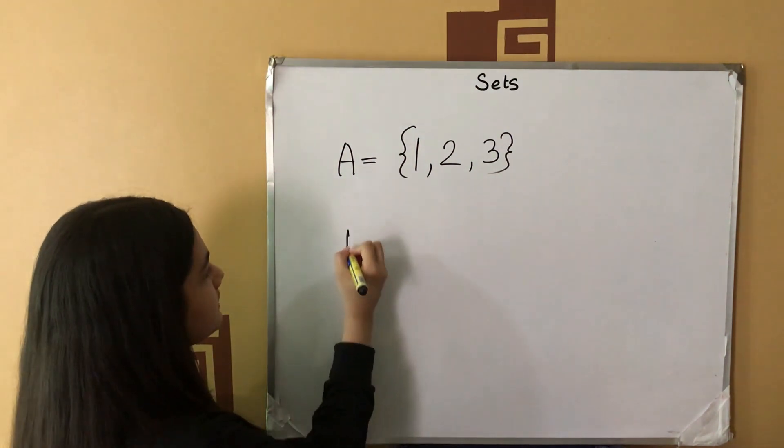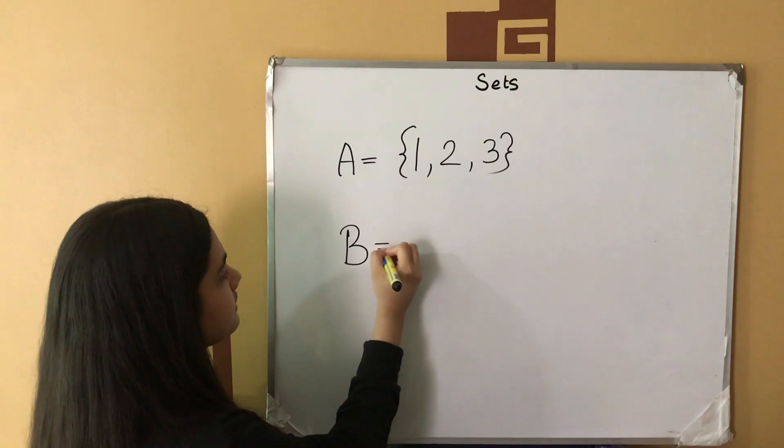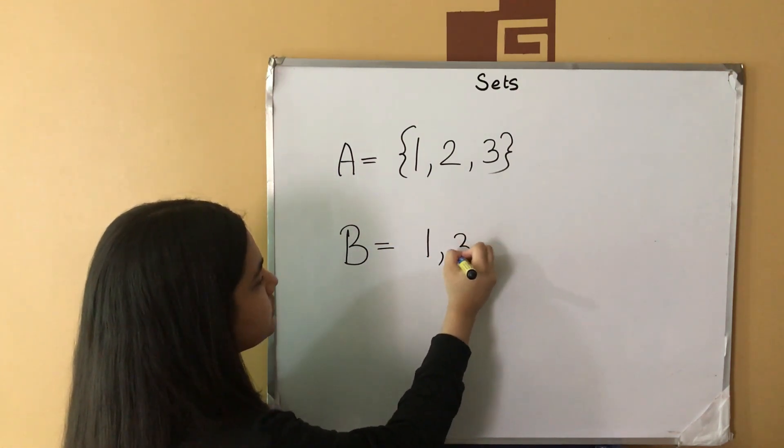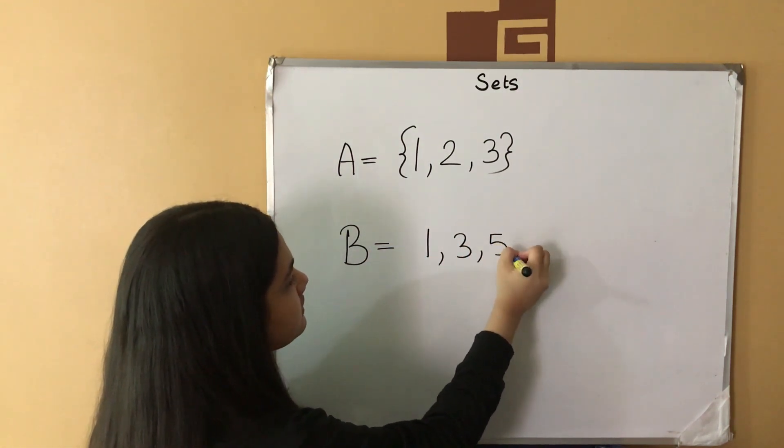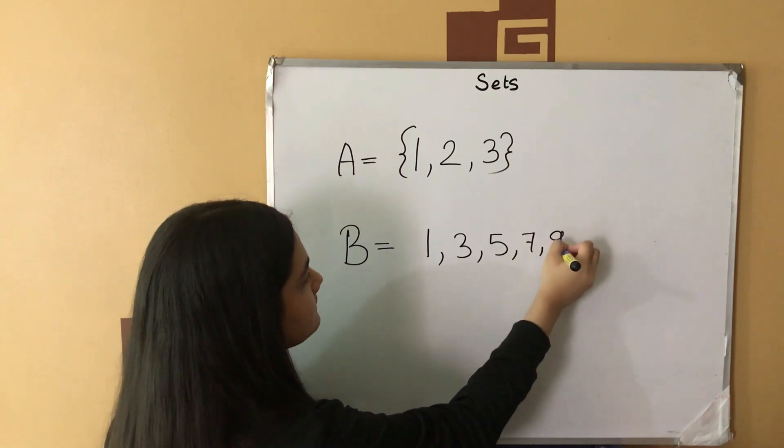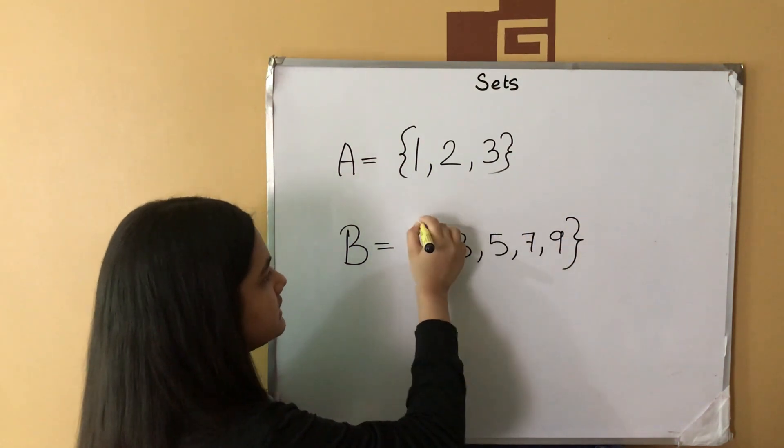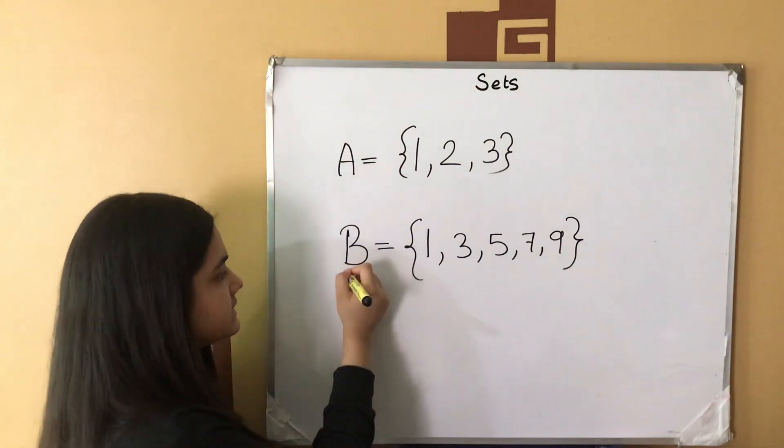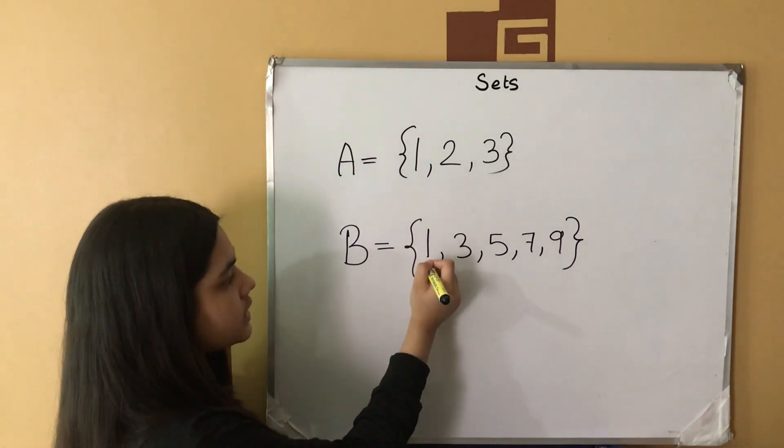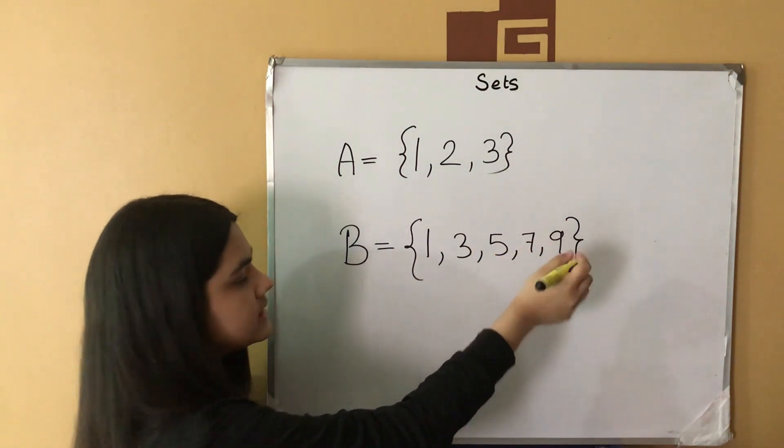Another example, this is set B whose elements are 1, 3, 5, 7 and 9. They're enclosed in second brackets. B is the name of the set whose elements are 1, 3, 5, 7 and 9.